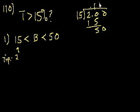15 goes into 50 three times. 3 times 15 is 45. And it just keeps going. So that's a 13% tip.